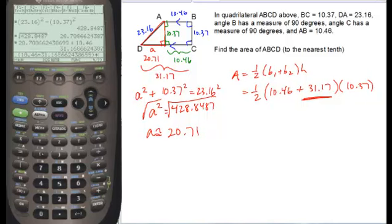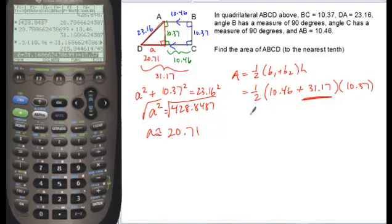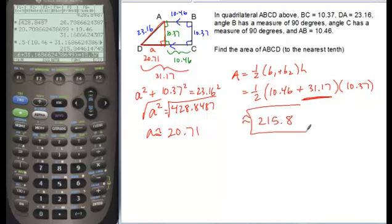Close that off and multiply it by 10.37. And when we do, we'll get our area to be about 215.8. It would be square units. We have nothing labeled, so we just write our solution.